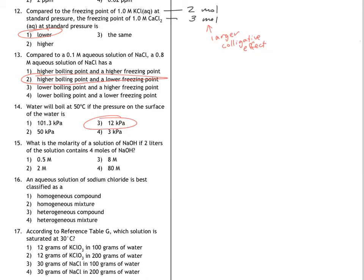What's the molarity of a solution of NaOH if two liters of the solution contains four moles of NaOH? So molarity is moles over liters. And we are looking for molarity, so we don't need to rearrange. But we know that we have four moles of NaOH. So I'll go ahead and plug that in. And it's going to be in two liters of solution. So that means our molarity is two molar.